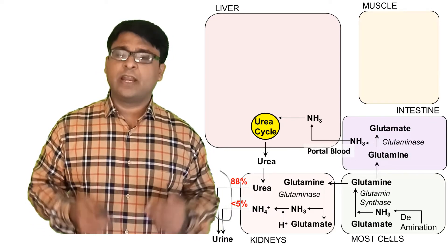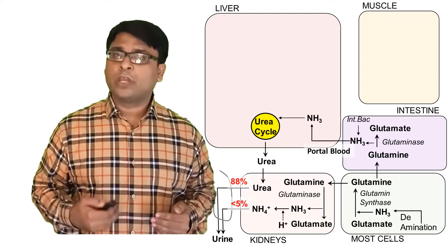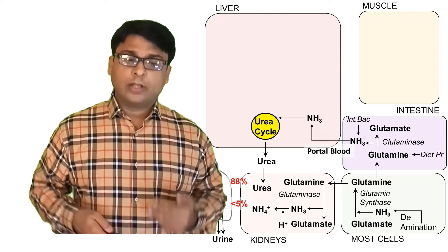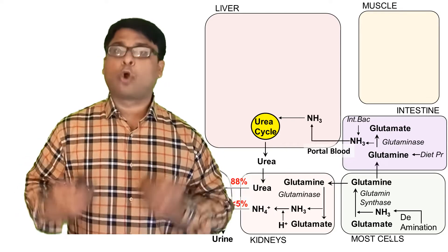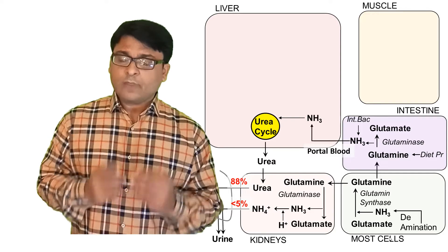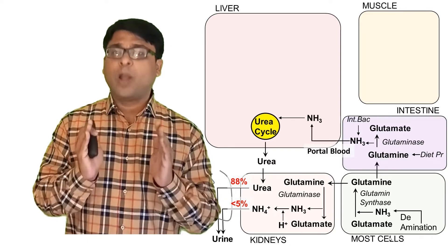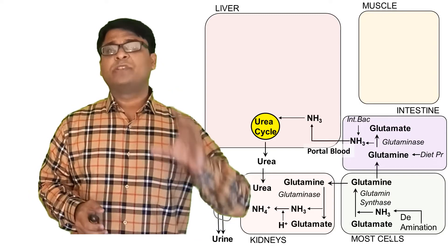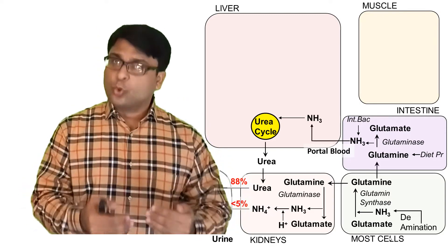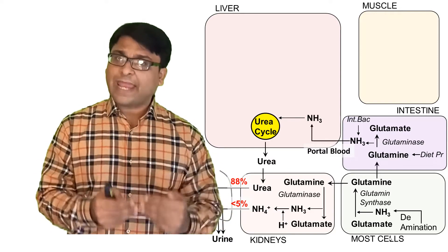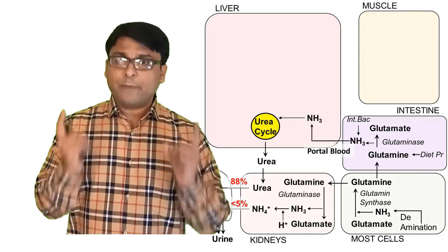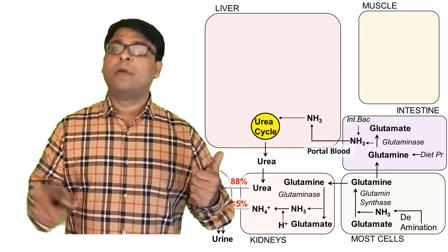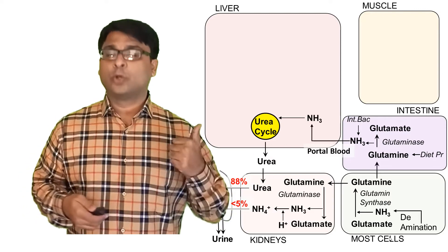In the intestine there is another source of ammonia: intestinal flora — the intestinal bacteria. Dietary protein also contributes to the formation of glutamine. This is one nitrogen source for the urea cycle. So the urea cycle inside the liver ultimately produces urea, and one of its two major nitrogen sources is ammonia coming from the intestine via glutamine.